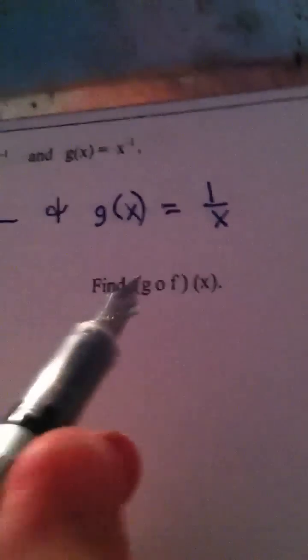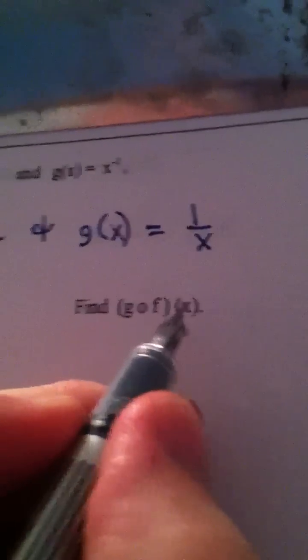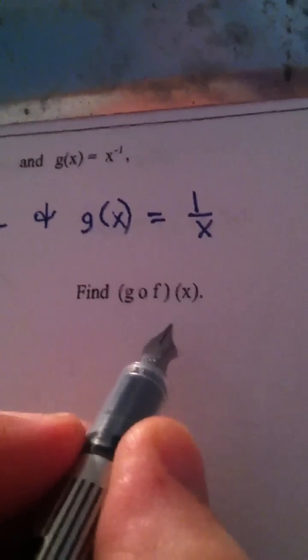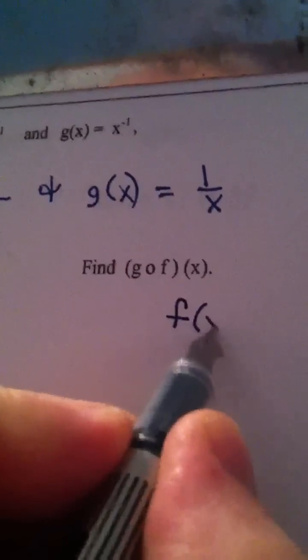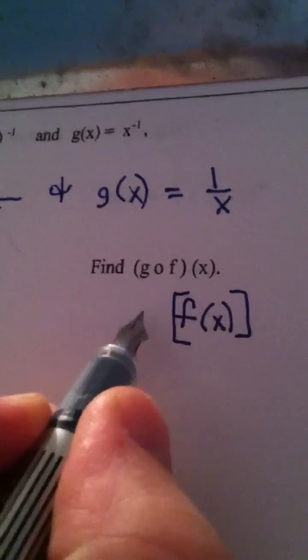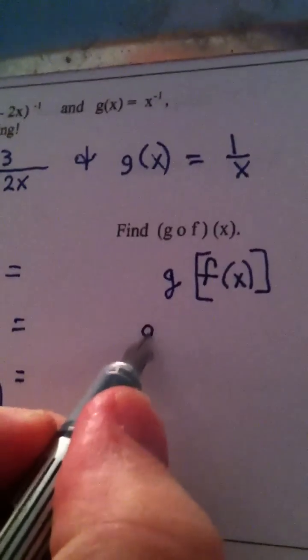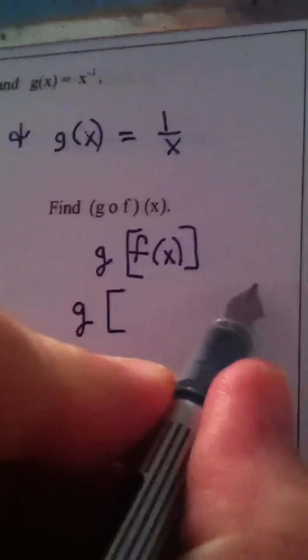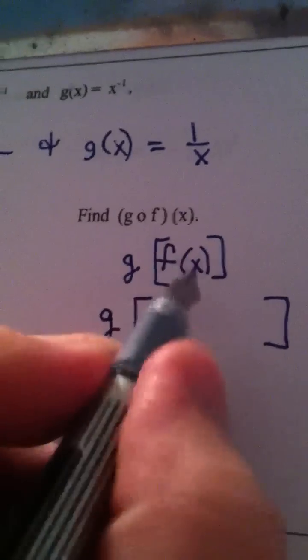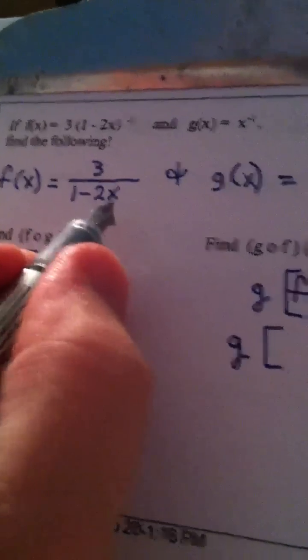Okay, now, next question. Find g composed with f of x. Well, I take x and I put it into f this time. And then I use function g. So I don't use g to start. I start with f of x. f of x is 3 over 1 minus 2x.